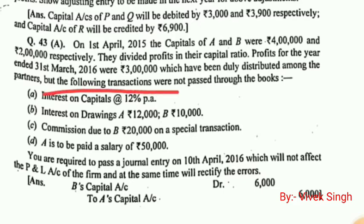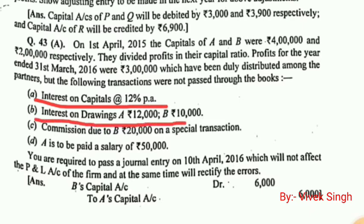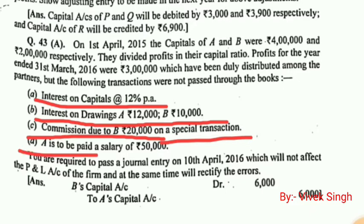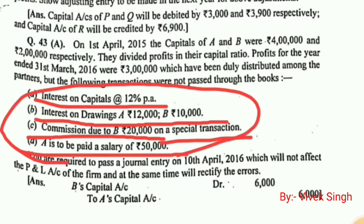The omitted transactions are: interest on capital at the rate of 12% per annum; interest on drawings — A: 12,000 and B: 10,000; commission due to B of rupees 20,000 on a special transaction; and a salary of rupees 50,000 to be paid to A. All four transactions are not recorded in the P&L appropriation account. This is a mistake that needs to be rectified.